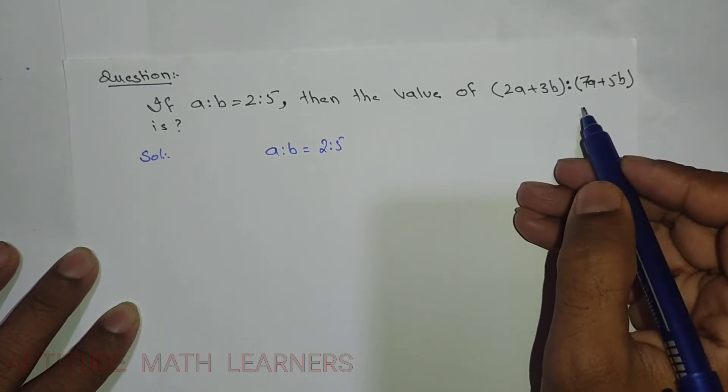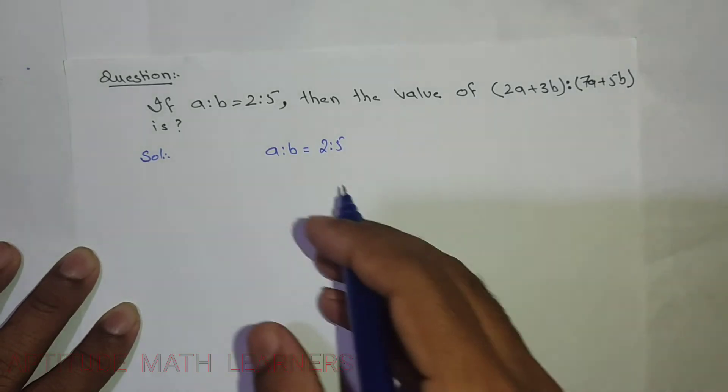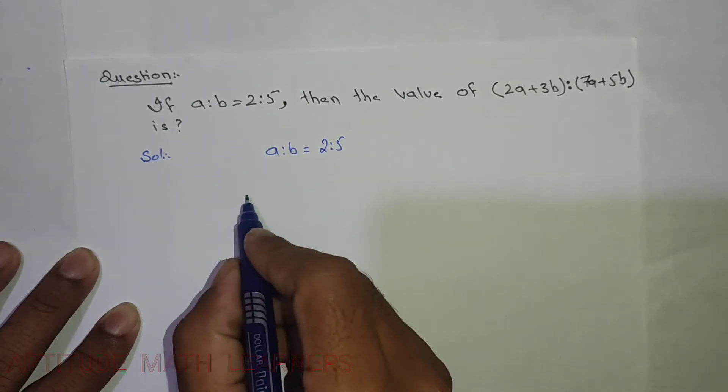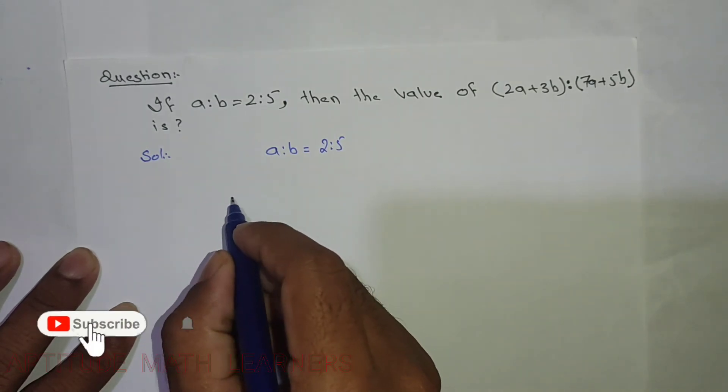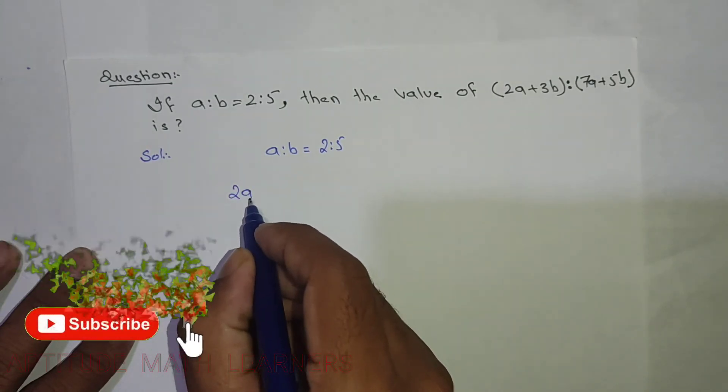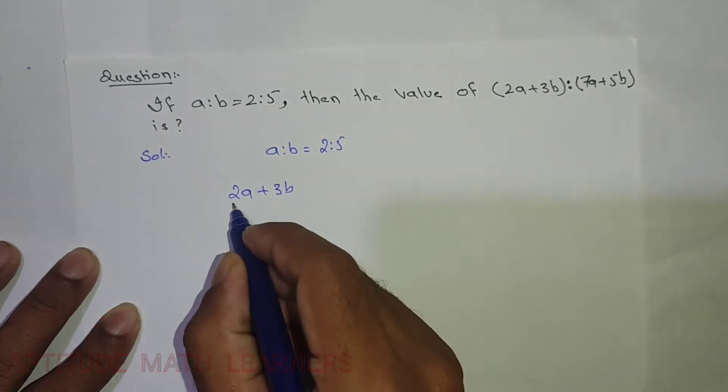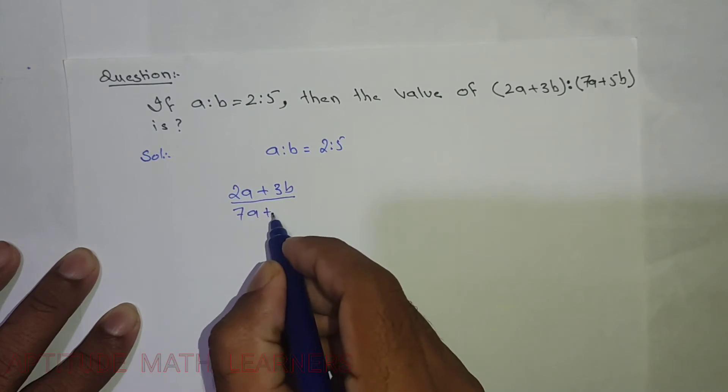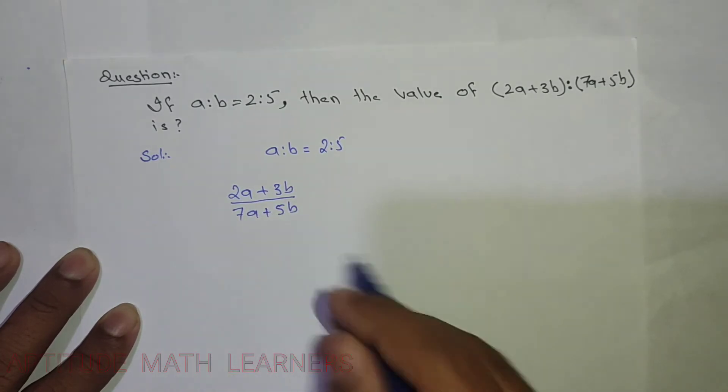What we need to do is convert it to fractional form. So we bring it into fractional form, which becomes (2a+3b)/(7a+5b). We've converted the ratio form into fractional form.